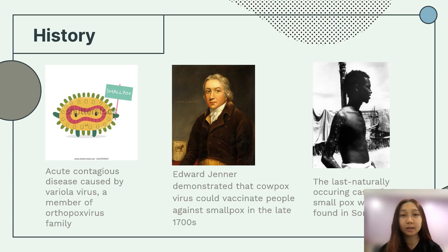Hi, I'm Wenxian and today I will be talking about the history of smallpox. Smallpox is an acute contagious disease caused by the variola virus, which is a member of the orthopoxvirus family. It was one of the most devastating diseases known to humanity and caused millions of deaths before it was eradicated. It is believed to have existed for at least 3,000 years. In the late 1700s, Edward Jenner demonstrated that cowpox virus could vaccinate people against smallpox.